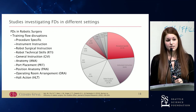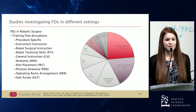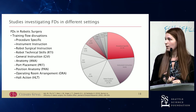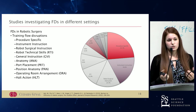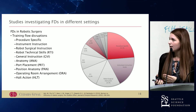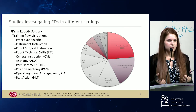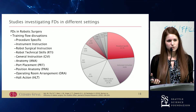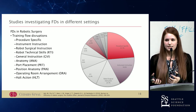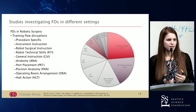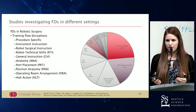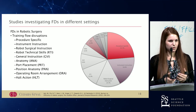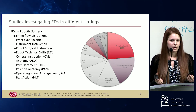They also dove deeper to look at what specific elements of training had to do with these flow disruptions. They found that most had to do with procedure-specific questions, instrument instruction, and robotic surgical instruction. It's really helpful to understand what elements of training may possibly disrupt the flow of surgery — because perhaps you could take some of those teachings to the sim lab, or give people more lessons outside the surgical room so you're not impacting your ability to stay on task while operating.